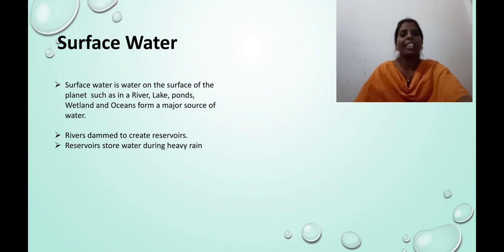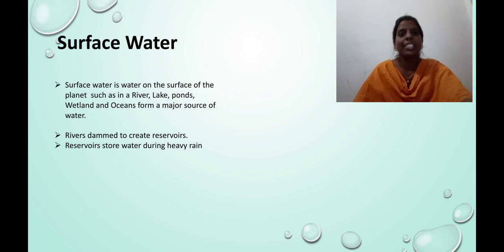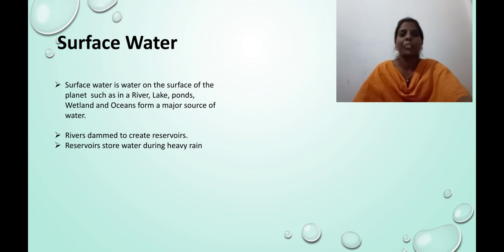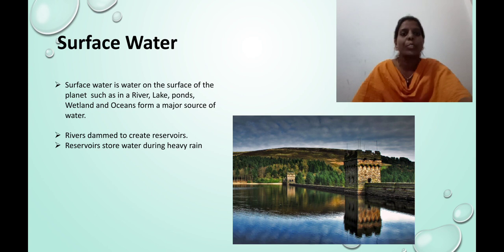Surface water is water on the surface of the planet, such as in a river, lakes, ponds, wetland, and ocean, forming a major source of water. The water from these is called fresh water. Only 1% of fresh water is available on this earth. Rivers are dammed to create reservoirs. Reservoirs store water during heavy rain.